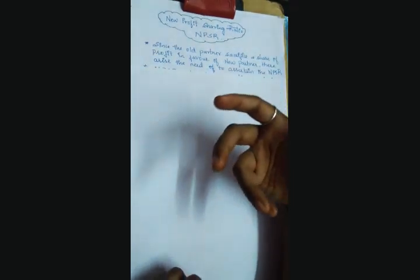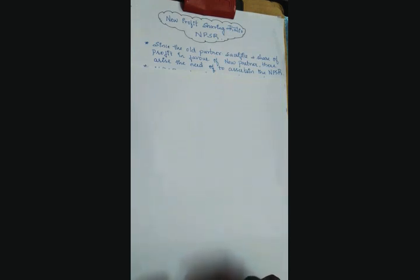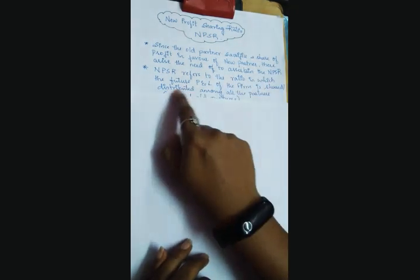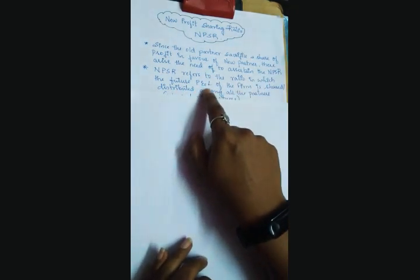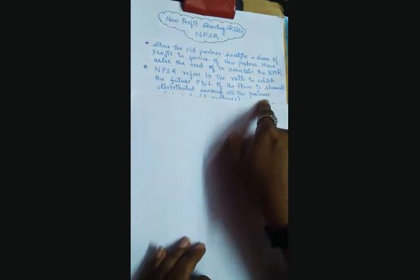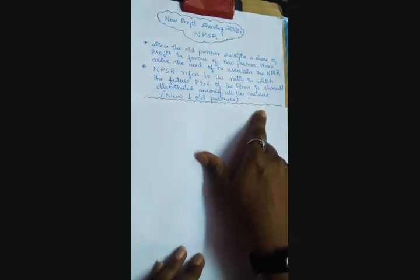There is a change in the partnership deed and a change in the profit sharing ratio. So we have to calculate the NPSR. NPSR refers to the ratio in which the future profit and loss of the firm is shared or distributed among all the partners in the partnership firm.